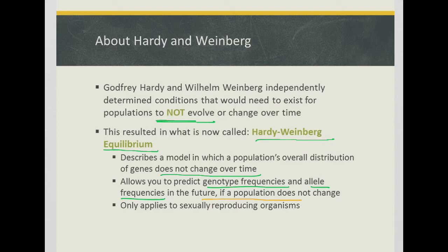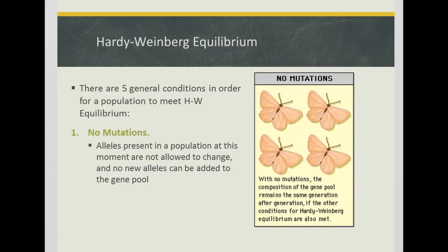Hardy-Weinberg only applies to sexually reproducing organisms, not asexually reproducing organisms. There are five general conditions for a population to be in Hardy-Weinberg Equilibrium, and if they meet these conditions, they will not be evolving.